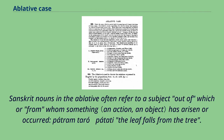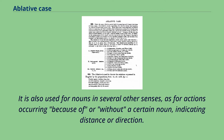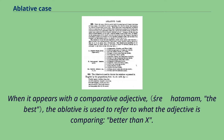Sanskrit nouns in the ablative often refer to a subject out of which or from whom something has arisen or occurred — for example, patraṃ taru-pātaḥ, 'the leaf falls from the tree.' It is also used for nouns in several other senses, such as for actions occurring because of or without a certain noun, and for indicating distance or direction. When it appears with a comparative adjective, the ablative is used to refer to what the adjective is comparing, meaning 'better than X.'